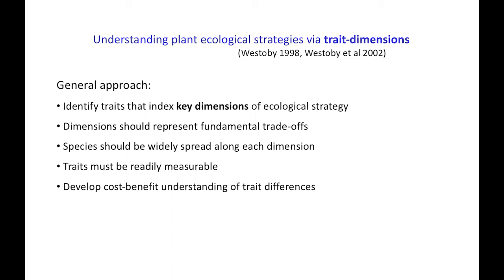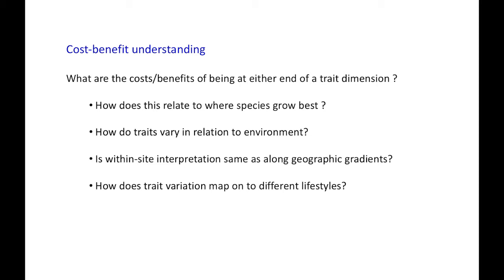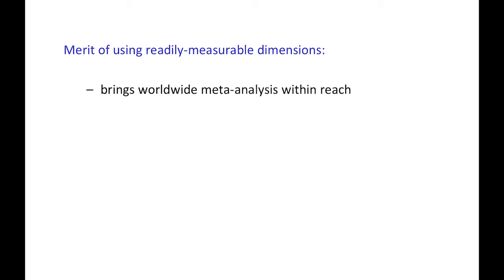The idea here is to understand plant ecological strategy dimensions and how we can understand the position of a species along a dimension in relation to its traits. First, we have to identify the ecological strategy dimensions, then identify the traits that index position along them. By key dimension, I mean one that represents a key ecological strategy trade-off. For this to be useful, species need to be widely spread along the dimensions and traits must be readily measurable. The whole aim is to develop a cost-benefit understanding of the trait differences. This 2002 Annual Reviews paper outlined a roadmap for where we thought plant ecology should go using this framework — one key advantage being that it would bring worldwide meta-analysis within reach.